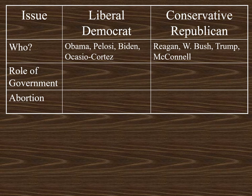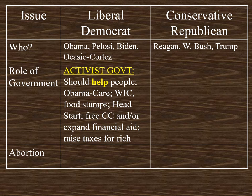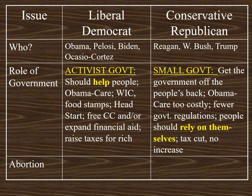Next, we'll explore how each party views the role of government. Democrats believe the government should be very active to help the American people achieve the American dream. One way is to have a national health care plan like the Affordable Care Act, or Obamacare. Programs like unemployment, WIC, food stamps, and Head Start help people in times of need, and many Democrats think those programs should be expanded. Democrats also often talk about free community college and expansion of financial aid. These programs cost a lot of money — and the solution many liberal Democrats support is to raise taxes on the rich. If you're earning over $250,000 a year, maybe you should be paying more in taxes, a liberal Democrat would argue.